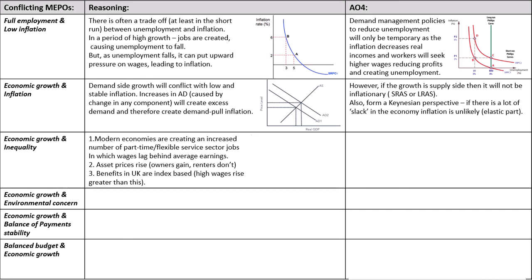There are a few reasons: modern economies are creating an increased number of part-time or flexible service jobs. Obviously the owners of these businesses get more money as the economy develops, while people in low-pay or national minimum wage work drives inequality. Asset prices — share prices, house prices — rise when the economy does well, creating a wealth effect for those who own them. But many people don't own assets; they end up paying rent, which causes inequality to worsen. Benefit systems are index-based, and the triple-lock scheme was suspended in 2022 — something worth looking up.